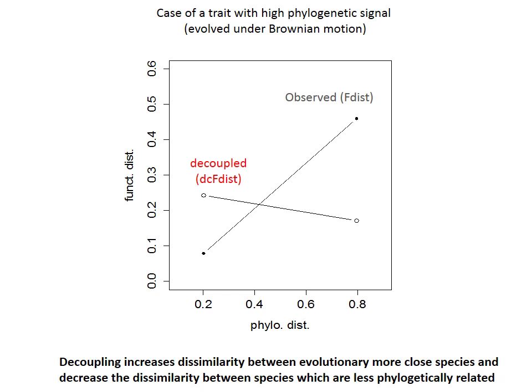Here we show, using simulation results, the case of increasing dissimilarity between phylogenetically closely related species, and decreased dissimilarity between phylogenetically distantly related species, when we use decoupling of traits from phylogeny. Trait evolution was simulated to follow Brownian motion, causing high phylogenetic signal. Of course, in the case of absence of phylogenetic signal, we showed in the paper that this effect disappears, and the decoupling does not change the similarity between species at all.